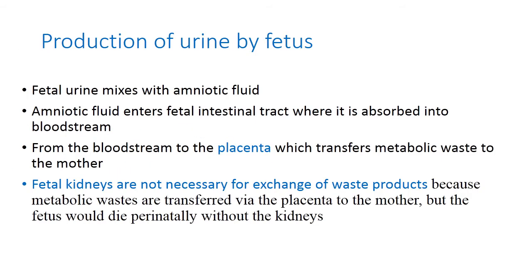Pay attention: the urinary bladder is formed from the primitive urogenital sinus and the urethra is an outgrowth of the mesonephric duct. Regarding fetal urine production, it mixes with amniotic fluid, which enters the fetal gastrointestinal tract where it is absorbed into the bloodstream, and metabolic waste is transferred via the placenta. Fetal kidneys are not necessary for the exchange of waste products because metabolic waste is transferred via the placenta.